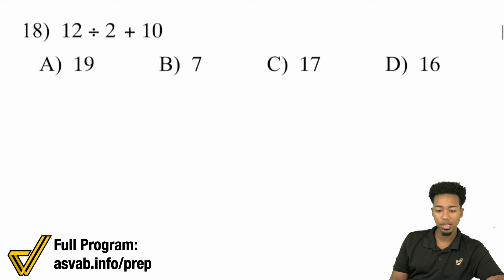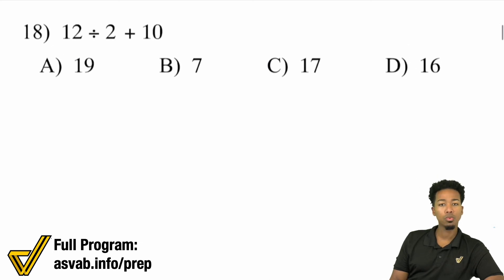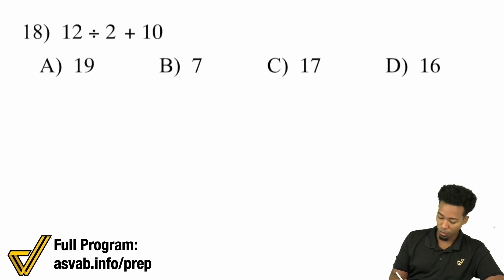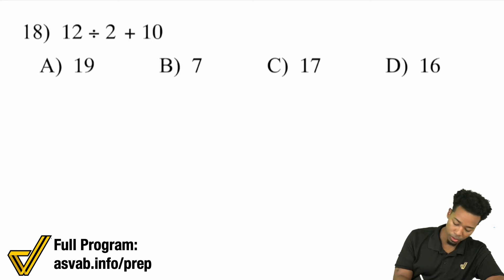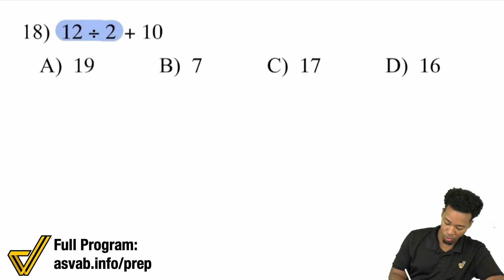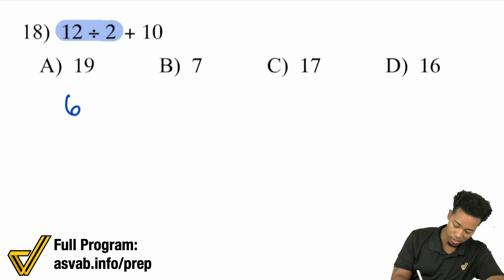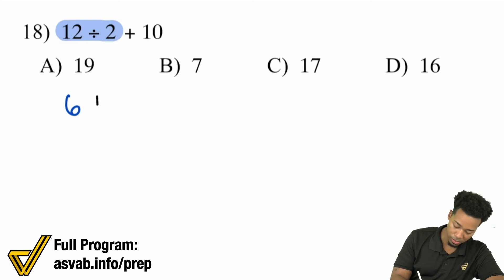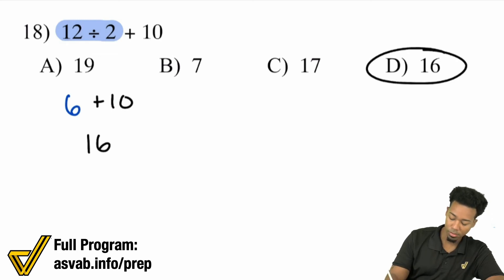Number 18: 12 divided by 2 plus 10. We know that multiplication and division come first before addition. So 12 divided by 2 gives us 6. Then we have 6 plus 10, and that's going to be 16. D.